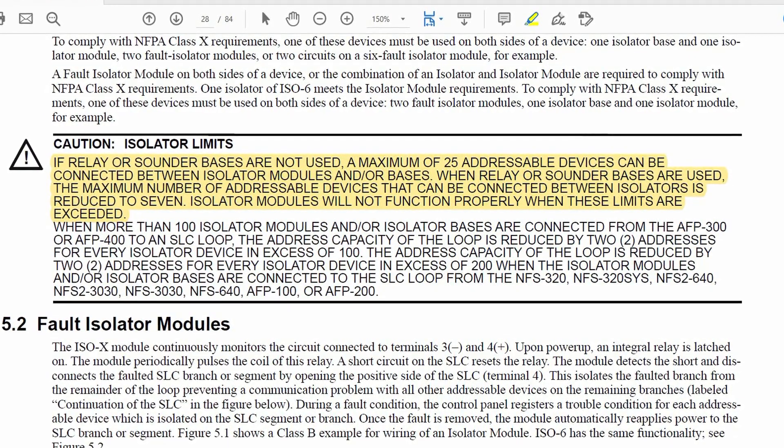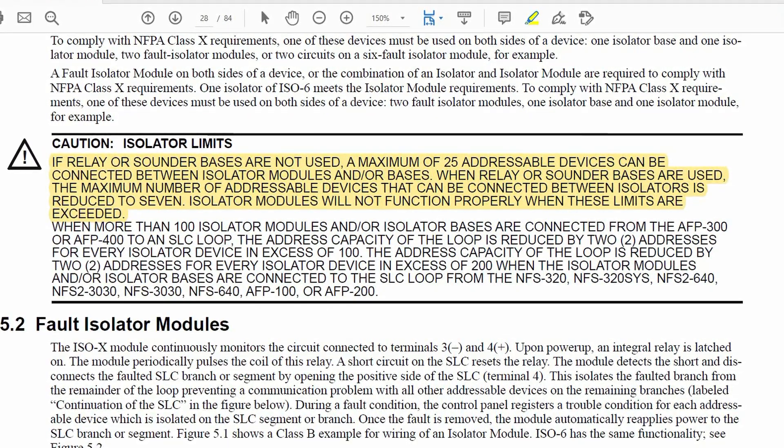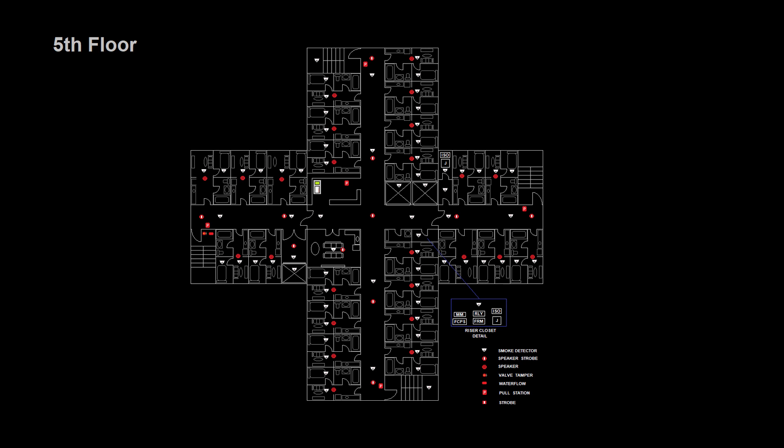In our case, since both sounder bases and relay modules are being used, we have to be strategic about where we install isolator modules. As we look at the conduit run on a standard floor, we're going to place the modules in the hallway where there will be a drop ceiling providing access to the devices above the ceiling tiles.